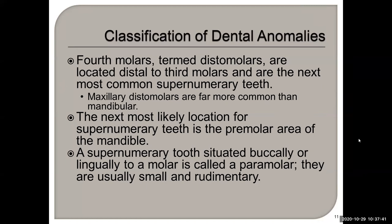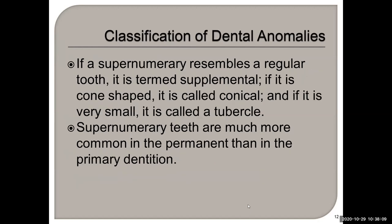A supernumerary tooth situated buccally or lingually to a molar is called a paramolar — it's usually smaller and rudimentary. So a fourth molar is distal to the third molar, whereas a paramolar is next to it buccally or lingually. If a supernumerary tooth resembles a regular tooth it's called a supplemental tooth; if it's cone shaped it's called conical; and if it's very small it's called a tubercle. Supernumerary teeth are much more common in the permanent dentition than in the primary dentition.